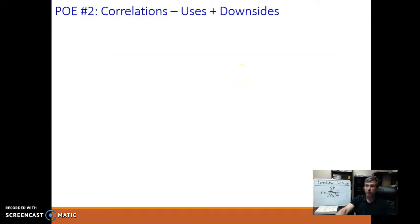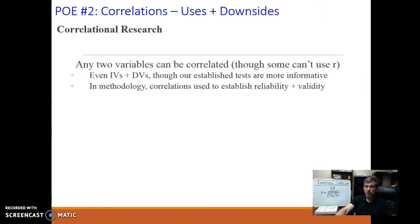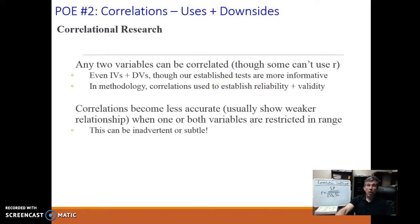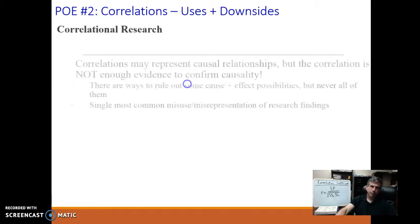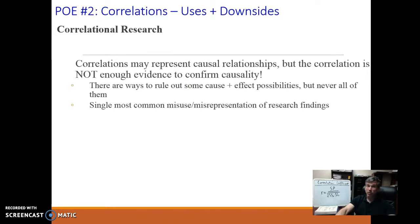All right, our point of emphasis is number two, and then we'll wrap things up pretty quickly. Any two variables can be correlated, even though not all of them can use Pearson's R. We can correlate IVs and DVs if we wanted to. We're not really going to do that. It's not that useful, but the point is that you could. We use, again, as we mentioned, we use correlations and methodology to establish reliability and validity. When one or both variables are restricted in range, our correlations tend to become more inaccurate, and they usually show weaker relationships than what actually exists. This can happen intentionally, which is bad, or it can happen in ways that are very subtle or not deliberate, which can be sneakier, harder to catch. Correlations sometimes really do represent causal relationships, but that mantra of correlation does not equal causation is there because a correlation is not enough information to confirm this.